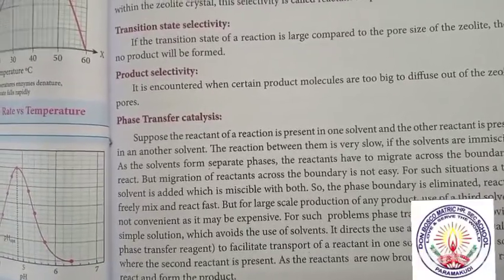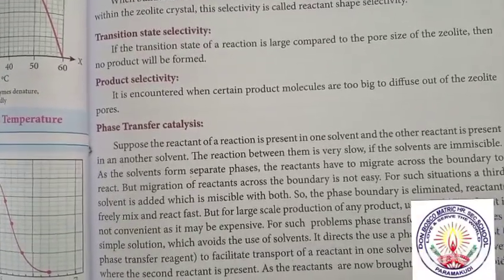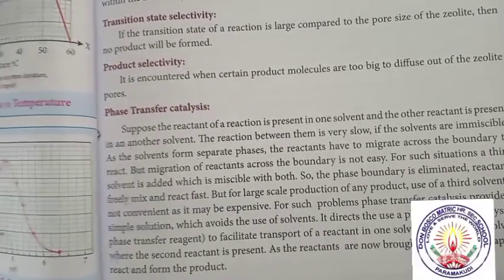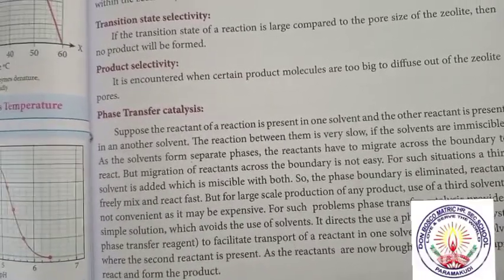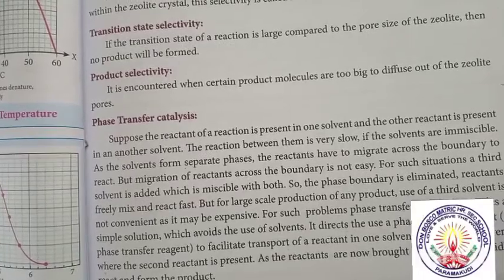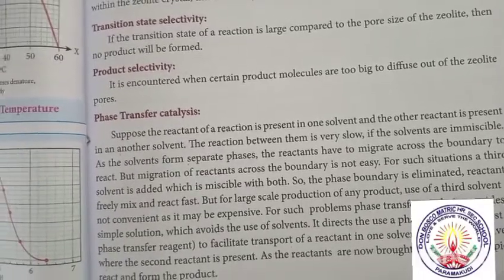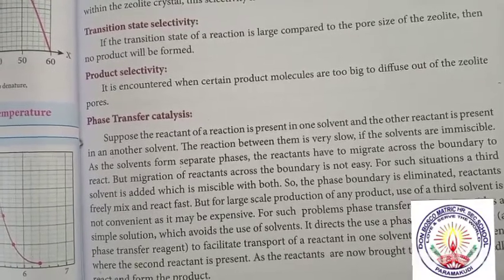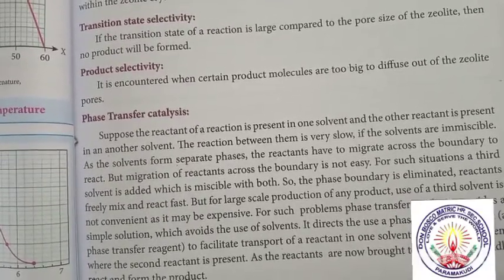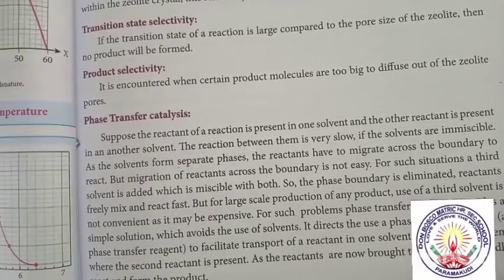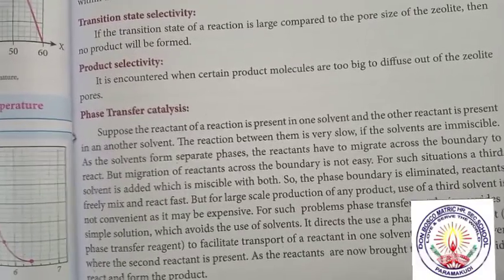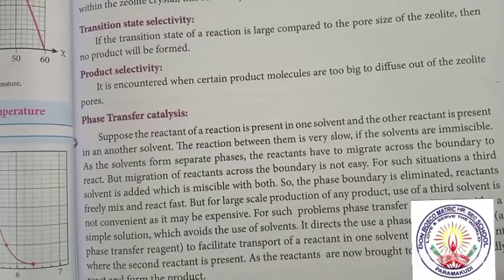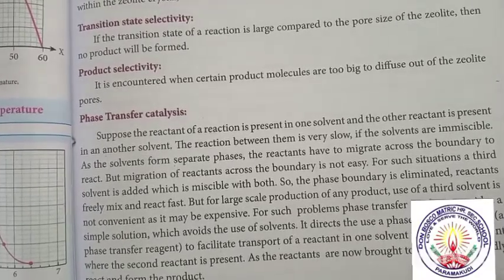But for large-scale production of any product, use of the third solvent is not convenient as it may be expensive. For such problems, phase transfer catalysis provides a simple solution which avoids the use of solvents. It directs the use of a phase transfer catalyst to facilitate transport of reactant from one solvent to the other solvent.